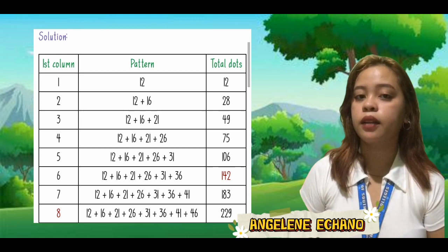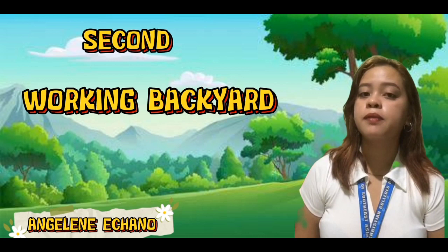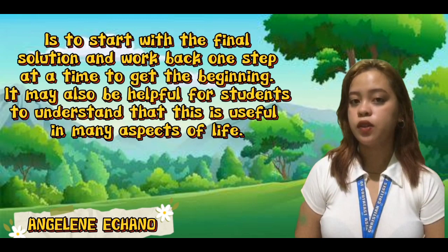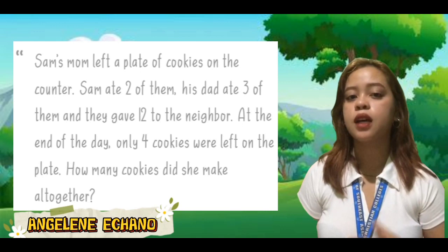Letter B: find the pattern of hexagons with 229 dots. If there are 229 dots, then the pattern has 8 hexagons in the first column. The second problem solving strategy is working backward — to start with the final solution and work back one step at a time to get to the beginning. This is useful in many aspects of life, not just solving math problems.